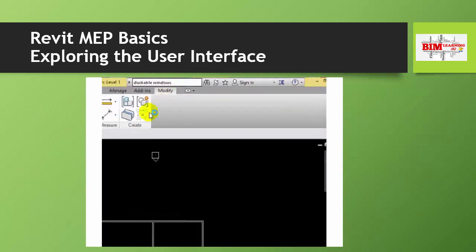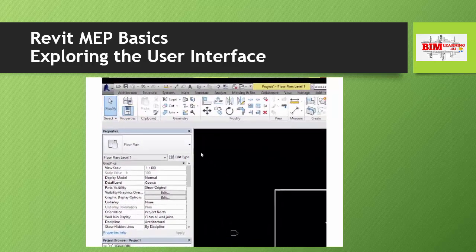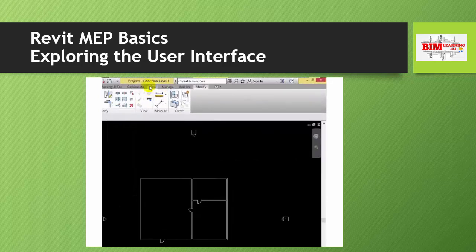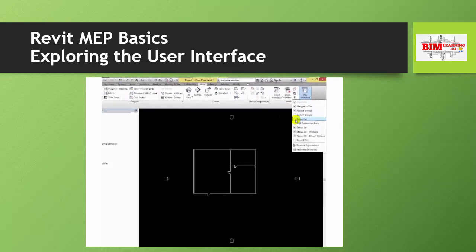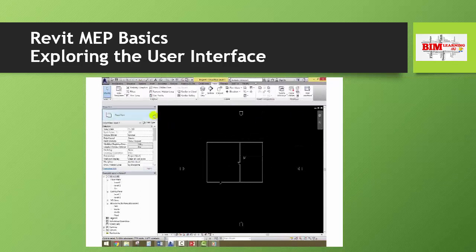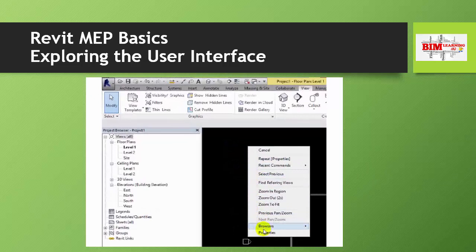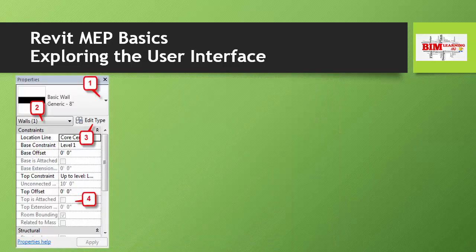Now I'm showing you how to open the Properties Palette if it is closed. This is the first option. Let's close it and open it through the second option: View > User Interface > Properties. Let's close it again and use the third option via the browser and Properties tab.